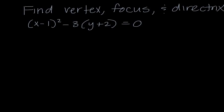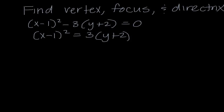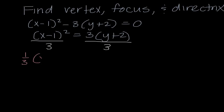Now let's get into some tougher problems. This one asks for the vertex, focus, and directrix — a signal that it's a parabola, confirmed because only one variable is squared. However, it's not in the correct form. The first thing I need to do is move 3 times (y plus 2) to the other side by adding it. Since it was subtraction, it becomes positive. I also need to get the coefficient onto the squared term, giving me one-third times (x minus 1) squared equals (y plus 2).